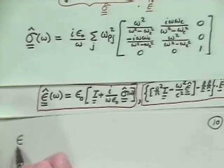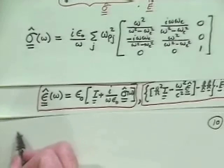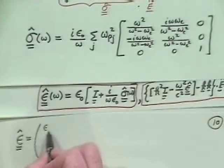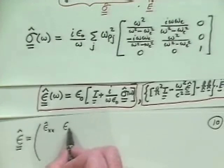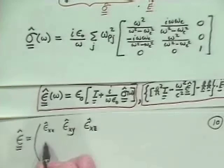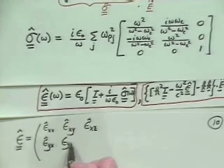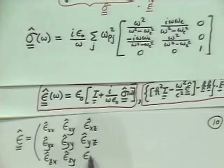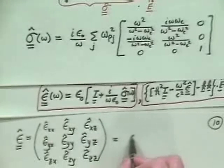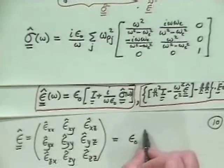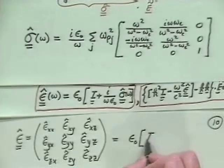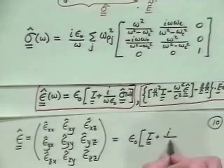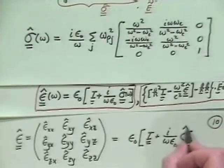So what we would do is say, we've got an epsilon hat, which we mean we have an epsilon xx hat, an epsilon xy, and an epsilon xz, epsilon yx, epsilon yy, epsilon yz — so we've got a full tensor. And then epsilon zx, epsilon zy, and epsilon zz. And this will just be the dielectric constant for free space, epsilon nought times the identity, plus i over omega epsilon nought times the conductivity tensor, which is a function of omega.